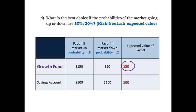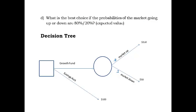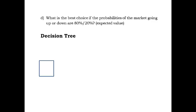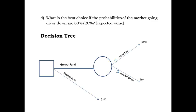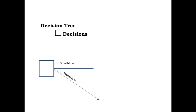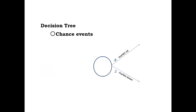Let's revisit the risky situation in decision tree format. A decision tree is drawn left to right, with time moving from the present to the future. Each branch on the tree represents a decision alternative or a risky event. For decision alternatives, the branches emanate from a square node. For risky or chance events, the branches emanate from a circle, labeled with probabilities measuring the chance of occurrence.